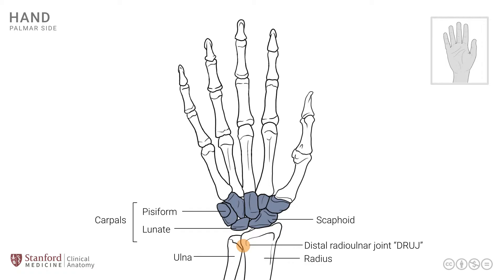The next set of bones are known as the metacarpals, and they are seen here, five in number — one for the thumb and then the remaining digits, the fingers. These articulate at their proximal end with the carpal bones, and their distal ends, these metacarpal bones, articulate with the phalanges.